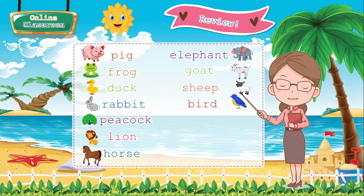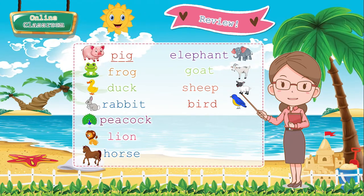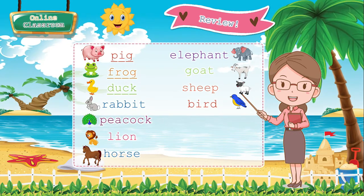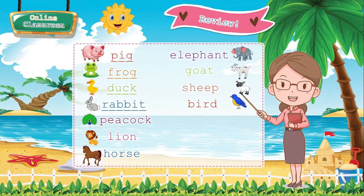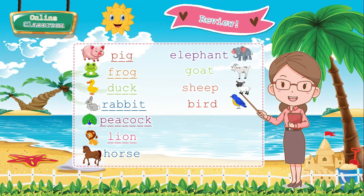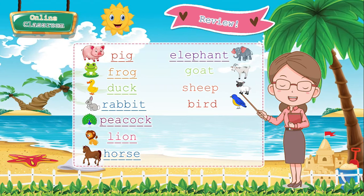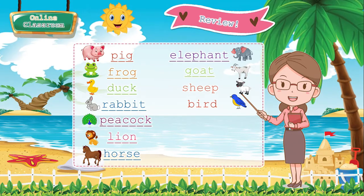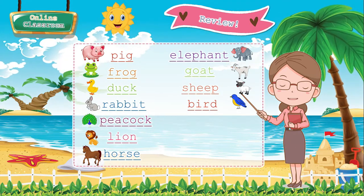So, last Tuesday we talked about the vocabulary words of animals. We have here: pig, frog, duck, rabbit, peacock, lion, horse, elephant, goat, sheep, and bird.